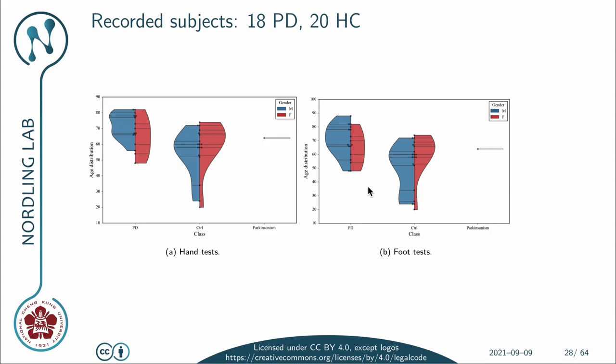After we have collected all the data, we need to do age matching between the groups, and then either analyze the minimum set for which we have all data, or analyze the different tests separately. We are actively working towards starting our data collection again. However, when the COVID-19 situation in Taiwan worsened, we had to completely stop data collection in May because of the severity of the situation, which caused hospitals to ban all non-essential activities.